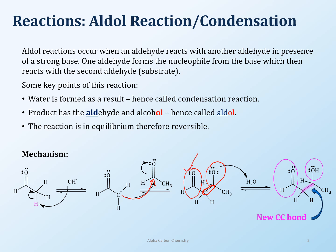The other aldehyde is converted to an alcohol because when that alkoxide is created, it picks up a proton. That second molecule of the aldehyde is going from an sp2 carbon to an sp3 carbon, giving you an alcohol. I've highlighted the new bond, the remaining aldehyde, and the newly created alcohol.